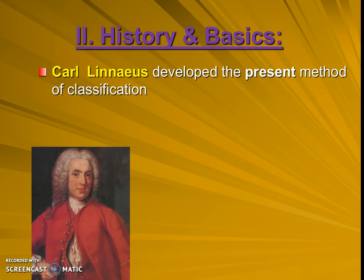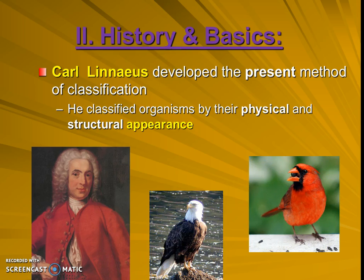To understand how we get those fancier scientific names, we first have to get a little bit of history and some background basics. That starts with this famous man, Carl Linnaeus — or Carolus Linnaeus, as he's sometimes spelled out. He developed the present method of classification, which was initially mostly based on structural or physical appearances.